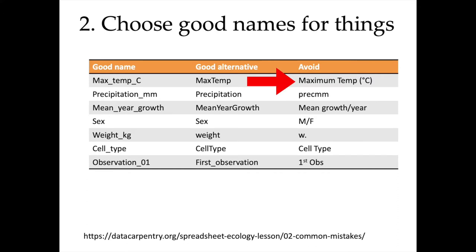You should avoid something like 'Maximum temp (°C)' because of the spaces, the degree symbol, and brackets — all of these are very difficult for a computer to understand. The slash is also a bad character to use because in a computer the slash often indicates the separation between a file and a folder. All characters that have a specific meaning for the computer should be avoided.